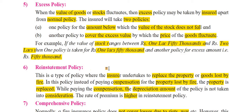The sixth type is Reinstatement Policy. This is a policy where the insurer undertakes to replace the property or goods lost by fire. So the insurance company replaces that property. Instead of paying monetary compensation for the property lost by fire, the property itself is replaced — the insurance company gives you the entire asset, property, or goods replaced.